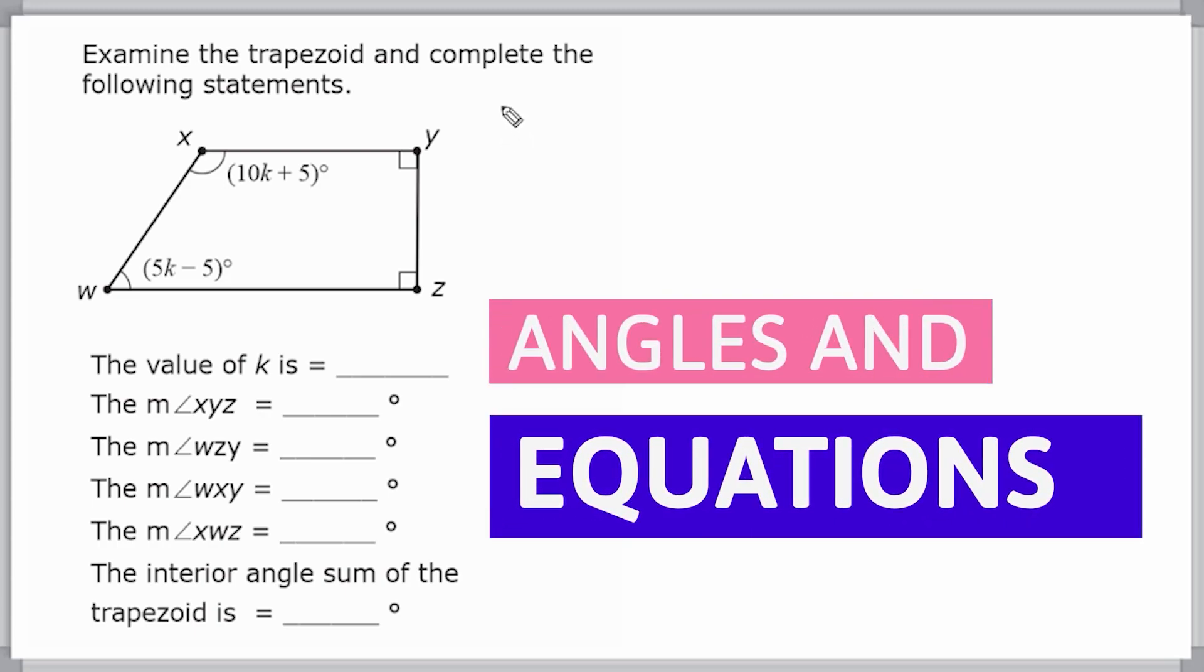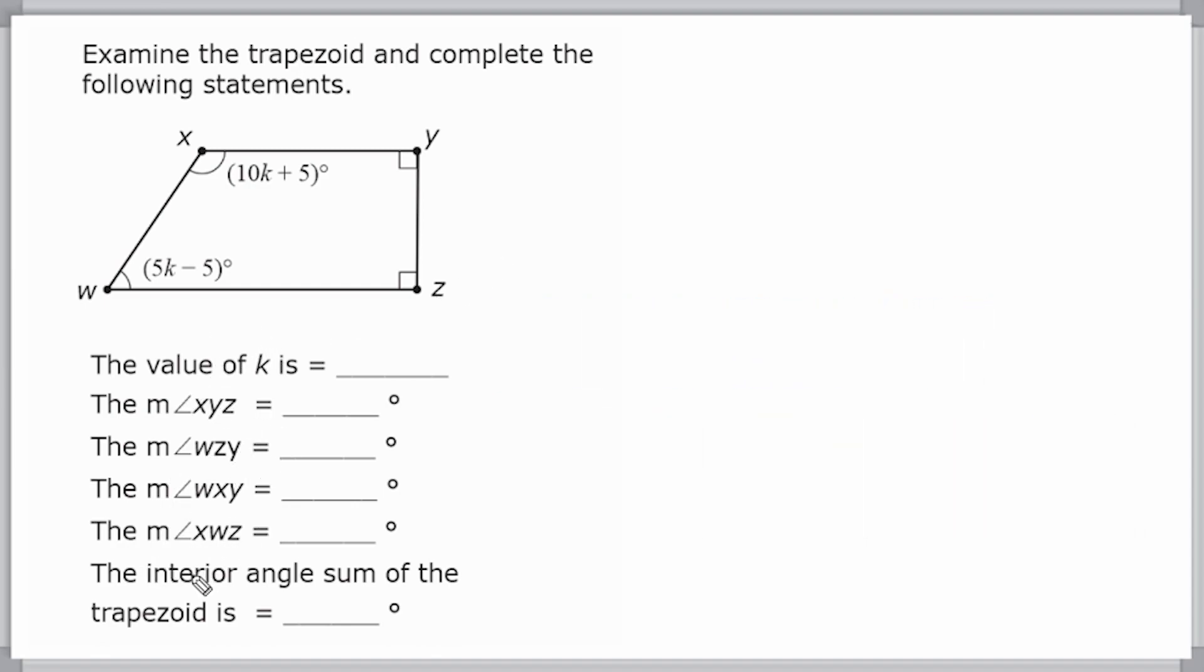Alright, so the problem reads that we have to examine the trapezoid and complete the following statement. So we have to find the value of k and the measures of these four angles, as well as state the interior angle sum of the trapezoid.